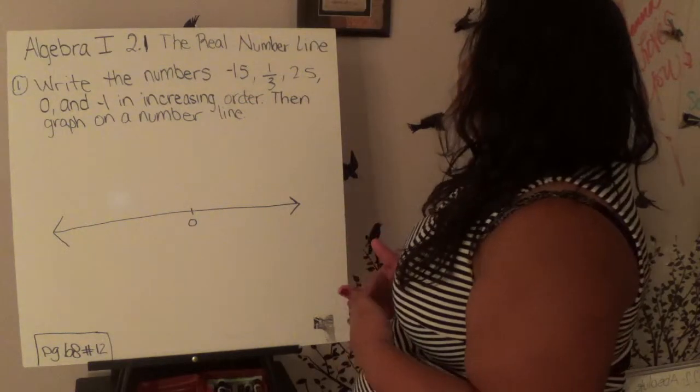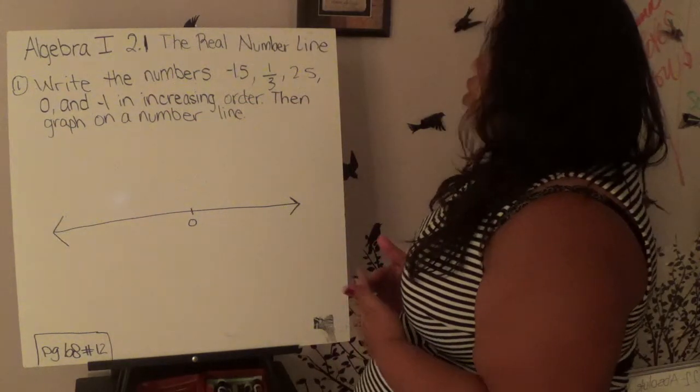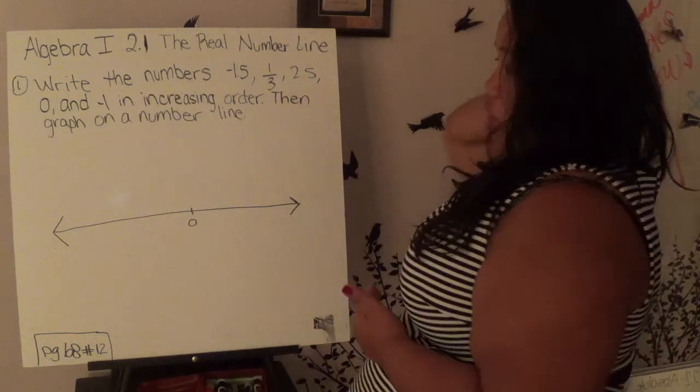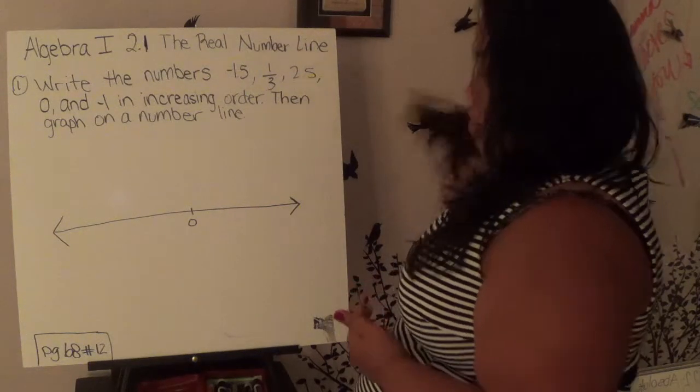write the numbers negative 1.5, 1 third, 2.5, 0, and negative 1 in increasing order, then graph it on a number line.